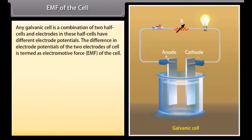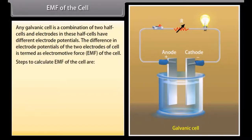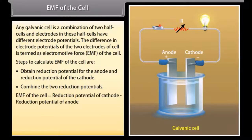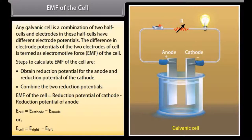EMF of the cell. Any galvanic cell is a combination of two half cells, and the electrodes in these half cells have different electrode potentials. The difference in electrode potentials of the two electrodes of a cell is termed as the electromotive force of the cell. Steps to calculate EMF of the cell: obtain reduction potential for the anode and reduction potential of the cathode, then combine the two. EMF of the cell = reduction potential of cathode − reduction potential of anode, that is, E(cell) = E(cathode) − E(anode), or E(cell) = E(right) − E(left).